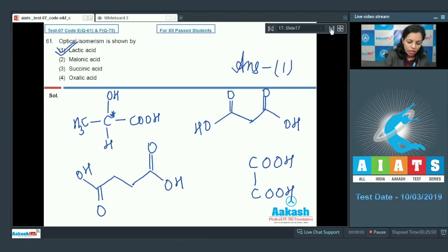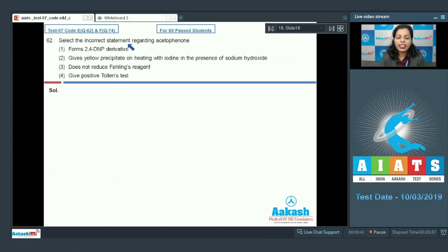After this, next question I have, question number 62, select the incorrect statement regarding acetophenone. If I talk about acetophenone, that is CH3COC6H5. It means it's a ketone and ketones have the nature to form 2,4-DNP derivatives. They are giving 2,4-dinitrophenol test. This is correct. I'm just marking here correct.